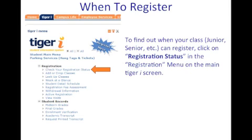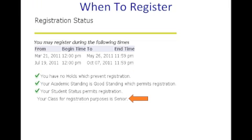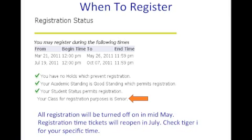During your semesters here, you can always find out when it's your time to register by clicking on the Registration Status in the Tiger Eye tab. All registration is turned off in mid-May and reopened in July — this is to give the incoming freshmen a shot at classes. You can always check for your specific time during the school year.